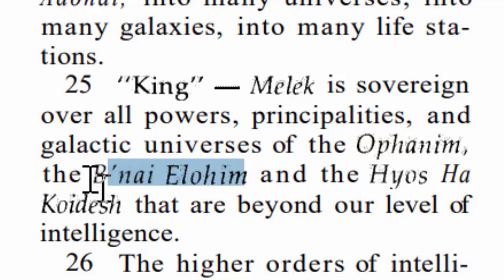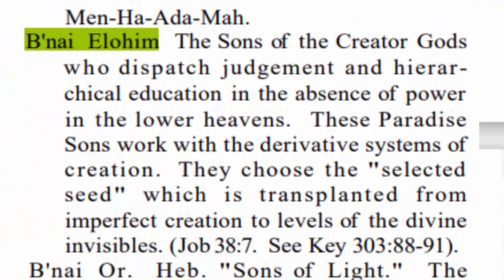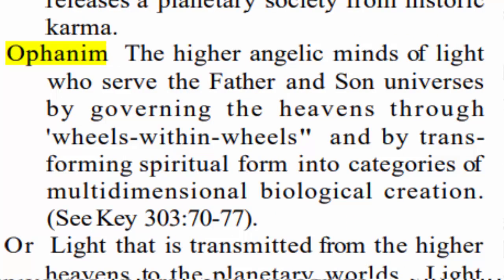In this book, it's important to get the definitions of these words. Looking over at the glossary, it says the Benay Elohim are the sons of the creator gods who dispatch judgment and hierarchical education in the absence of power in the lower heavens. These paradise sons work with the derivative systems of creation — they choose the selected seed which is transplanted from the imperfect creation to levels of the divine invisible. It's referenced in Job chapter 38, verse 7. These are talking about the Ophanim, who are the spirit behind the prophets — the prophets were actually talking to these Ophanim.